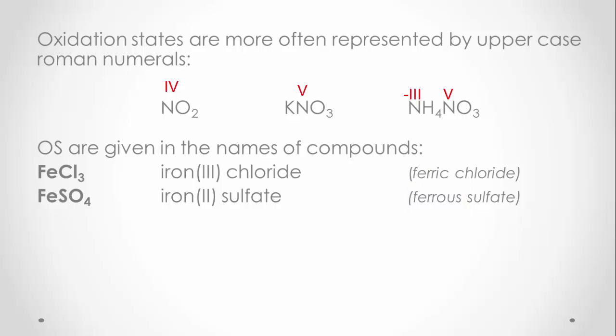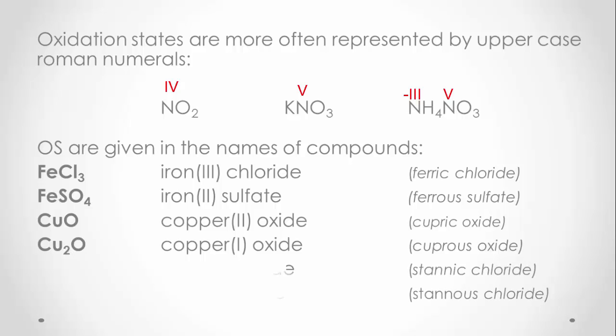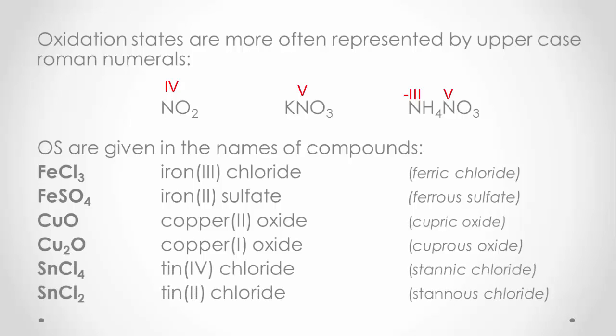You will see this in copper compounds too: CuO is copper(II) oxide or cupric oxide, being the higher oxidation state; and Cu2O is copper(I) oxide or cuprous oxide. Other examples include tin(IV) chloride, called stannic chloride, and tin(II) chloride, called stannous chloride.